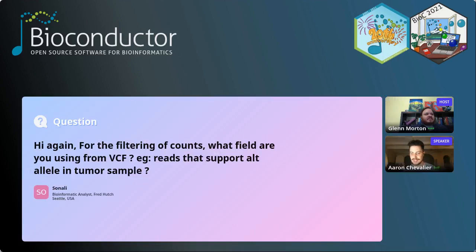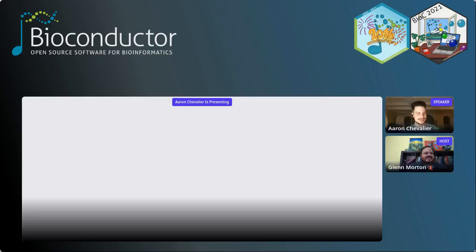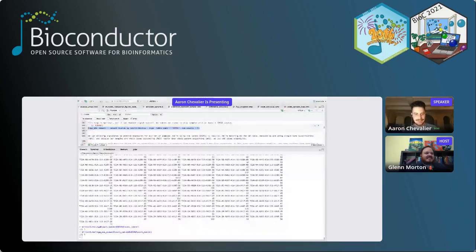Yeah, we've got Sonali, hi again, for the filtering of counts. What fields are using from VCF, e.g. reads that support alt allele in tumor sample. So, there's two different things that we're talking about. So, here I actually am going to present some live code demo. I'll go against my prior judgment against not doing that. Let's see if I can present my RStudio. Is that visible? Can you see what's on my screen here? Yep, okay, it looks like it's there. Okay, great. So, two answers. I'll actually answer both of the other questions. I'll just read this out quickly.